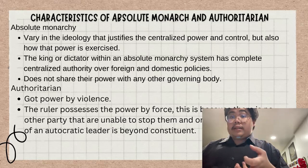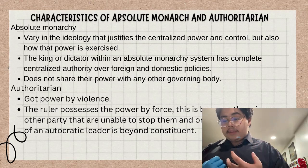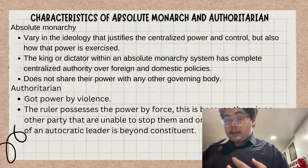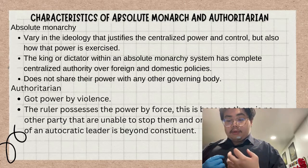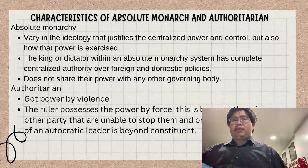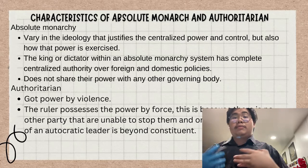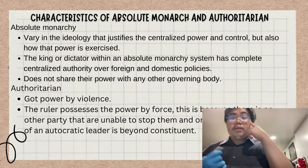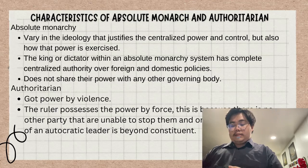Moving on, we'll be talking about characteristics of authoritarian. Absolute monarchy is a variant ideology that justifies centralized power and control, and also determines how that power is to be exercised. The king or the dictator with an absolute monarchy system has completely centralized authority over foreign and domestic policies and does not share power with any government body such as a parliament. Authoritarian rulers possess power by force, as there is no other party able to stop them, and the power of an autocratic leader is beyond the constitution.